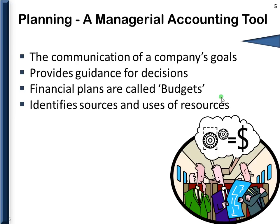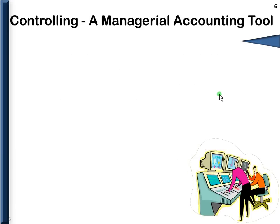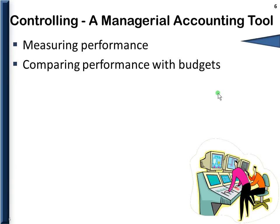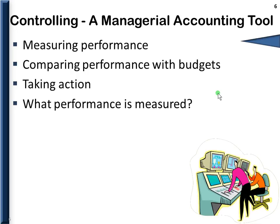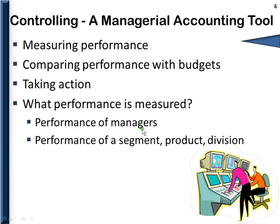Controlling is another managerial accounting tool used to measure performance. We compare actual performance with budgeted amounts, look at the differences, and often have to take action. The kind of performance measured can be the performance of a manager or the performance of a unit as a whole — such as a product, a division, or a segment. Take, for example, the Jacksonville Jaguars this season. Del Rio, the coach, is no longer around. Was it because he had a bad performance as a manager, or was it because the whole team was just pitiful? Performance can be gauged on different factors within a company.